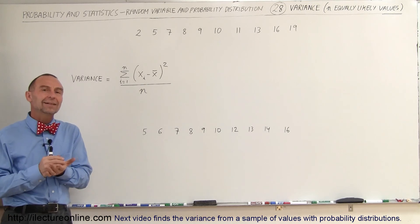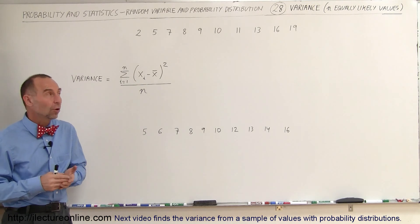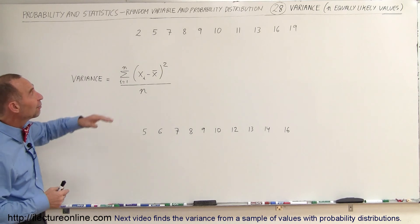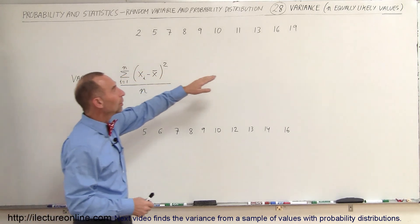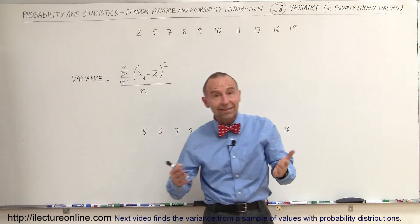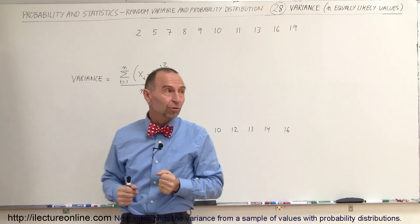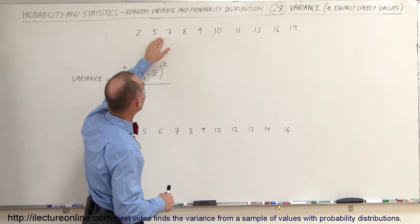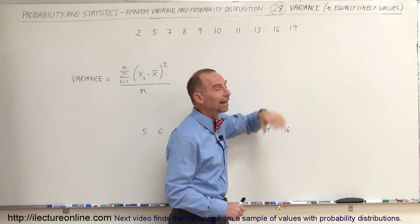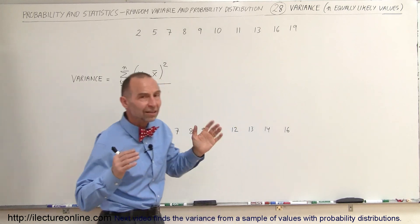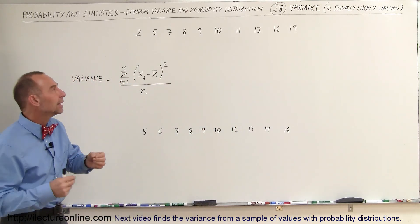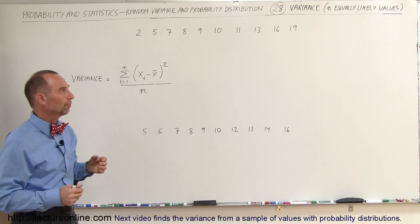Variance can be calculated in several different ways. One way is when we have what we call N equally likely values. In this example there are ten values: 2, 5, 7, 8, 9, 10, 11, 13, 16, and 19. There are ten different values and we assume there is an equal probability that any of these values can occur.